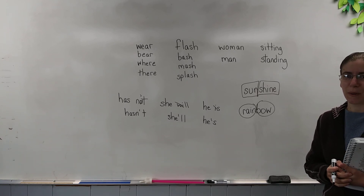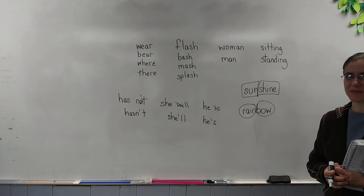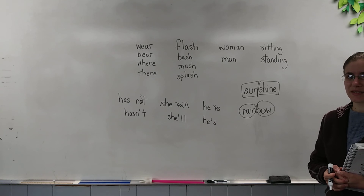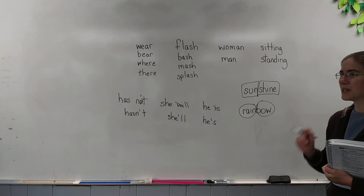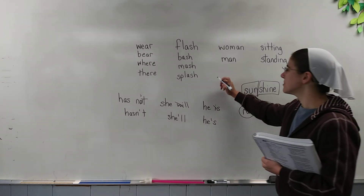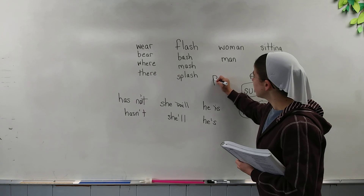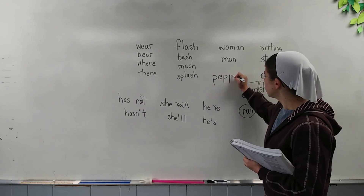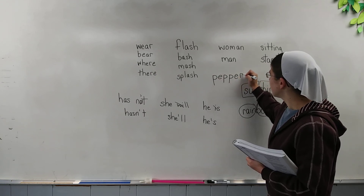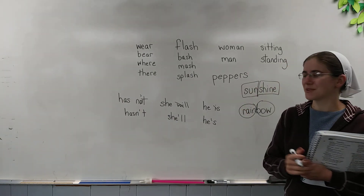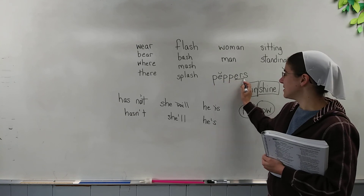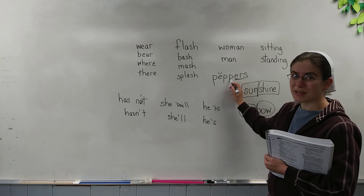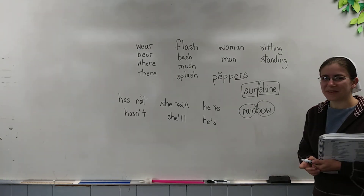Let's do this one for fun. Write the word peppers. Here is the word peppers — I'm going to write it right up here on the board. P-E-P-P-E-R-S. Peppers. We have a short vowel word 'pep,' and then if we're going to add a suffix E-R, we need to double the P. Peppers.